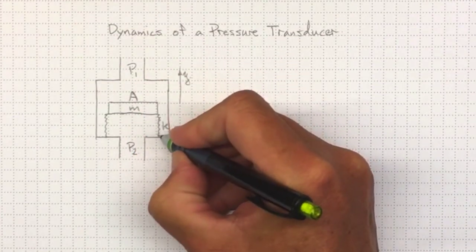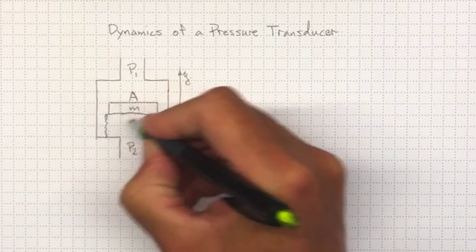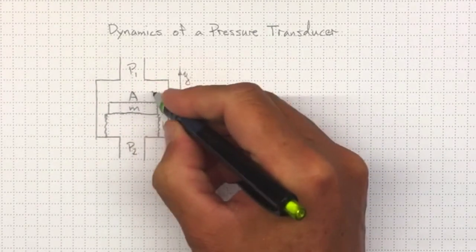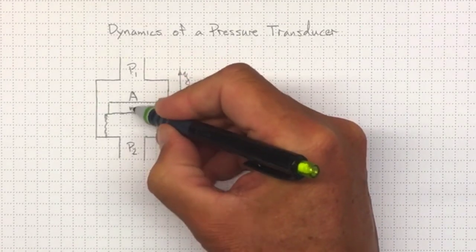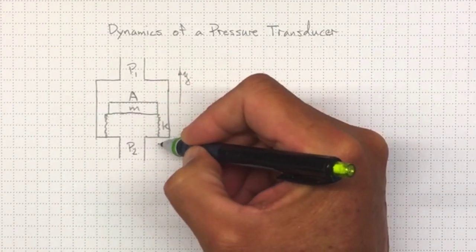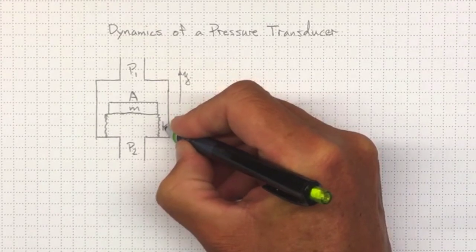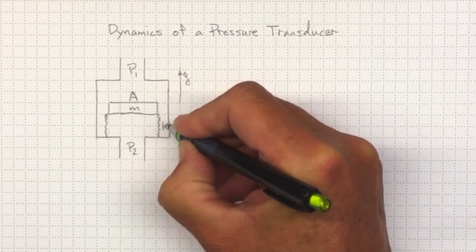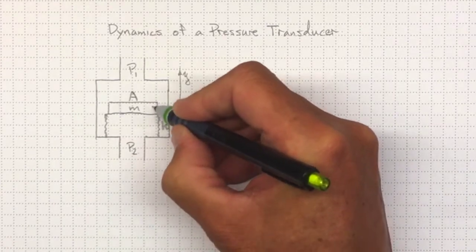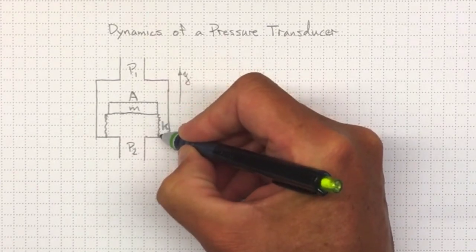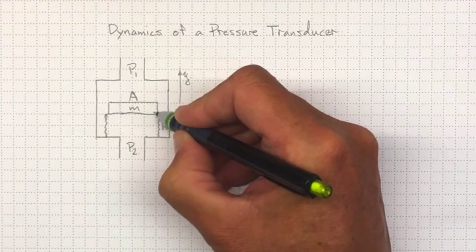Now there's some kind of flexible material over here that's keeping these two areas of the box separate, and it's springy to allow that mass to move up and down. So we can imagine that there's some spring constant associated with that elastic motion there. So that the further we move it, the stronger the force is to try to pull it or push it back to where it was.